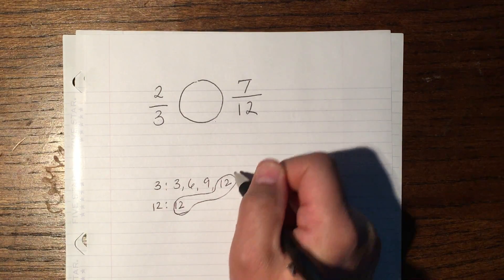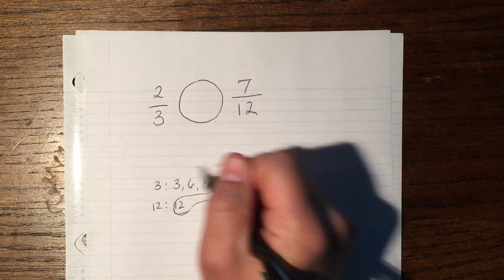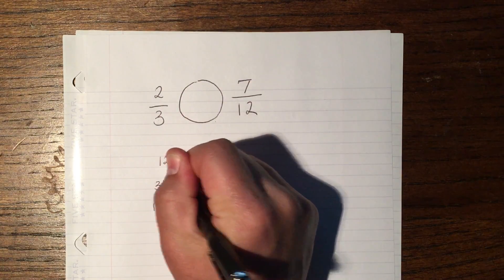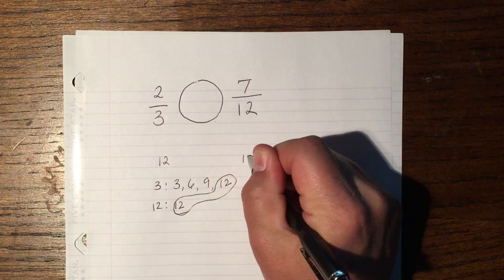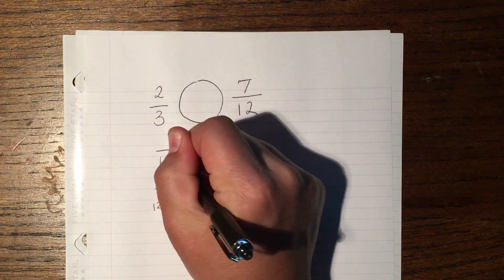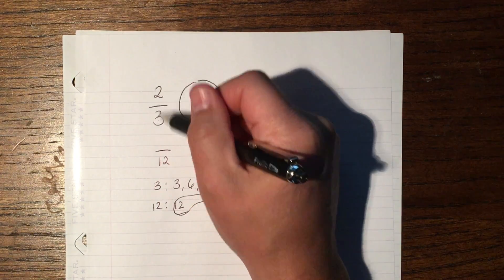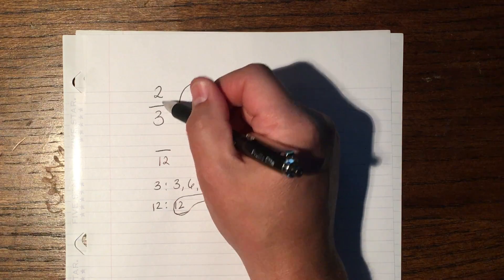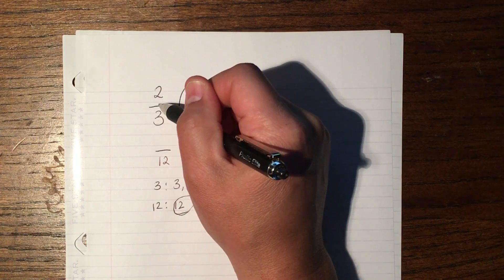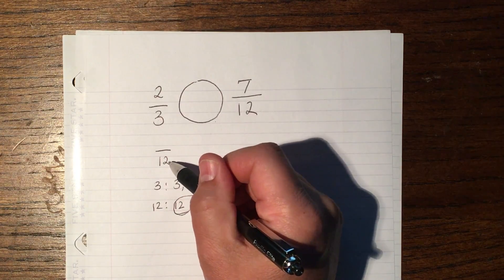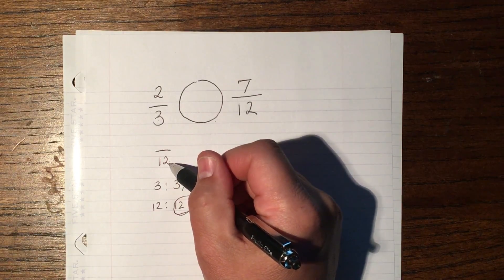I'm going to use that as my new denominator for both of these fractions. I'm going to put 12ths and rename this fraction. I'm going to find an equivalent fraction that has 12ths as a denominator.